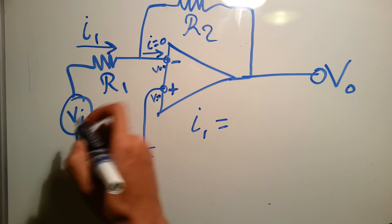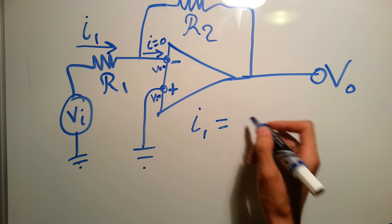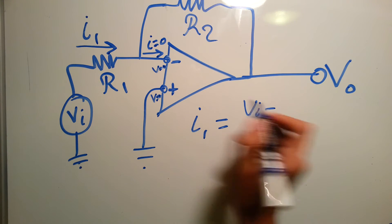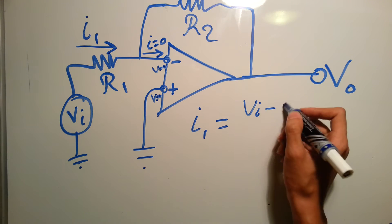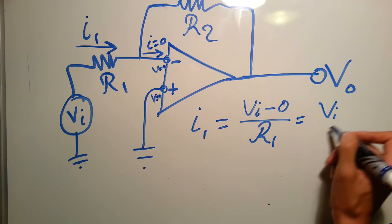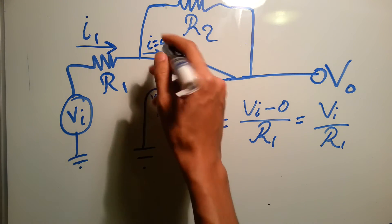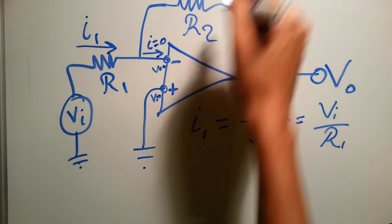I1 equals the voltage minus the voltage over here minus the voltage over here over R1. So VI minus the voltage here is 0 over R1, which is VI over R1. And since there is no current over here, then all of I1